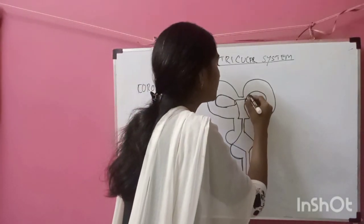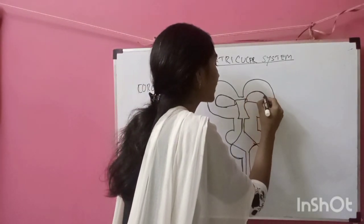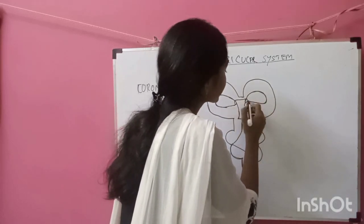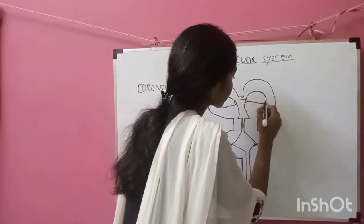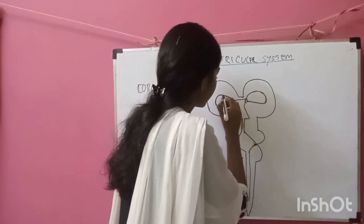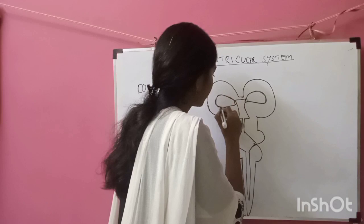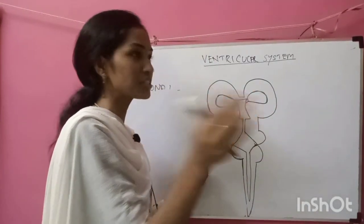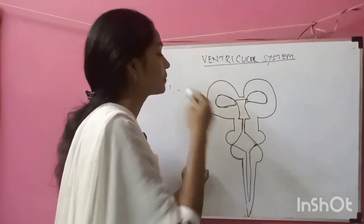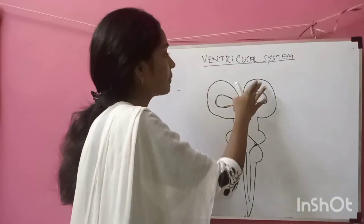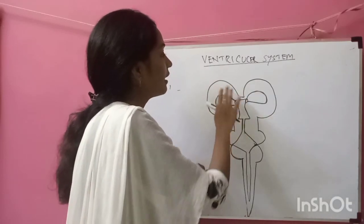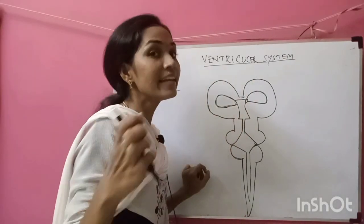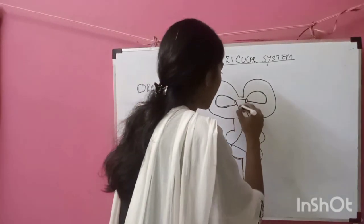First, these two balloon-like structures are the two lateral ventricles which are present in the cerebrum. The cerebrum is actually a compound of the telencephalon.